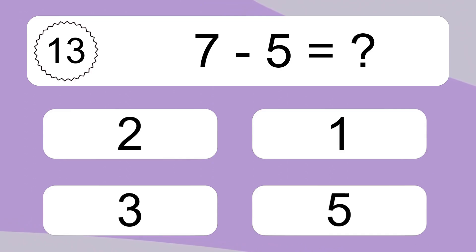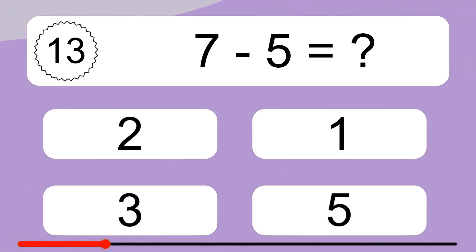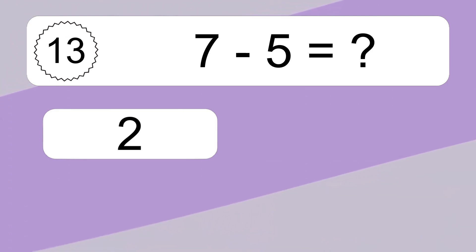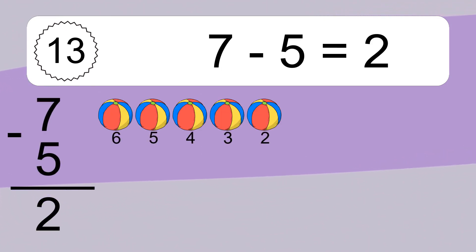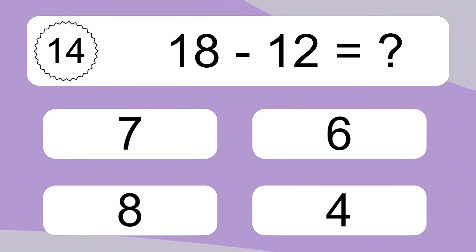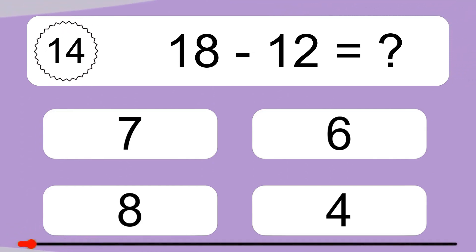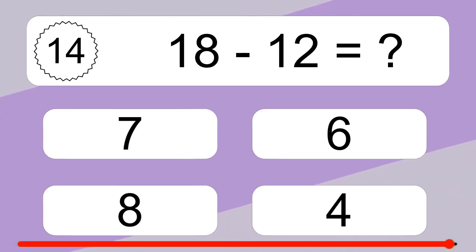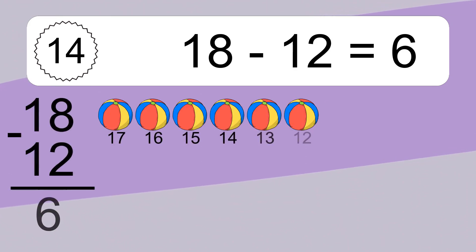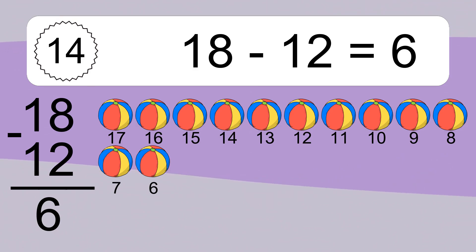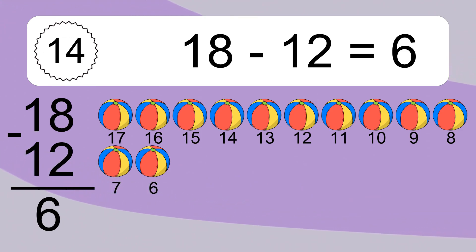7 minus 5 equals what? 7 minus 5 equals 2. Let's count it: 6, 5, 4, 3, 2. 18 minus 12 equals what? 18 minus 12 equals 6. Let's count it: 17, 16, 15, 14, 13, 12, 11, 10, 9, 8, 7, 6.